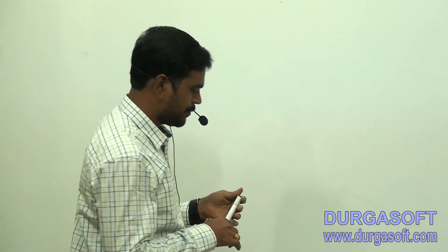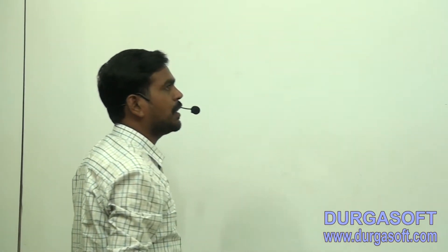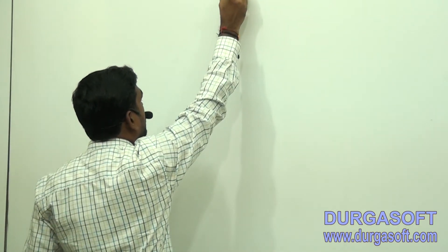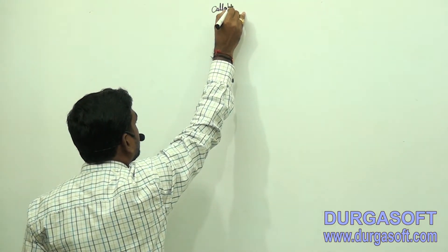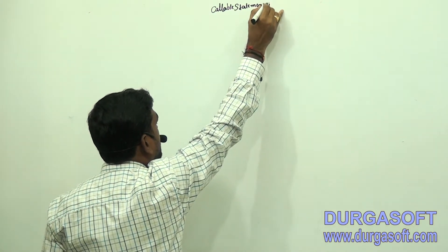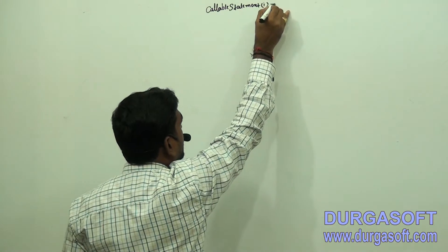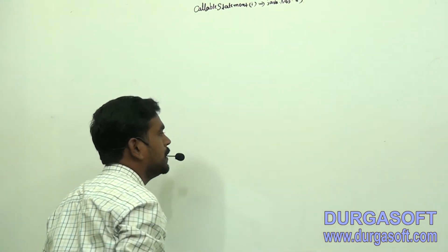Now we'll see how to call procedures. If we want to call procedures, we have to use CallableStatement. CallableStatement is an interface available in the java.sql package. By using this CallableStatement object, we can call the procedures.